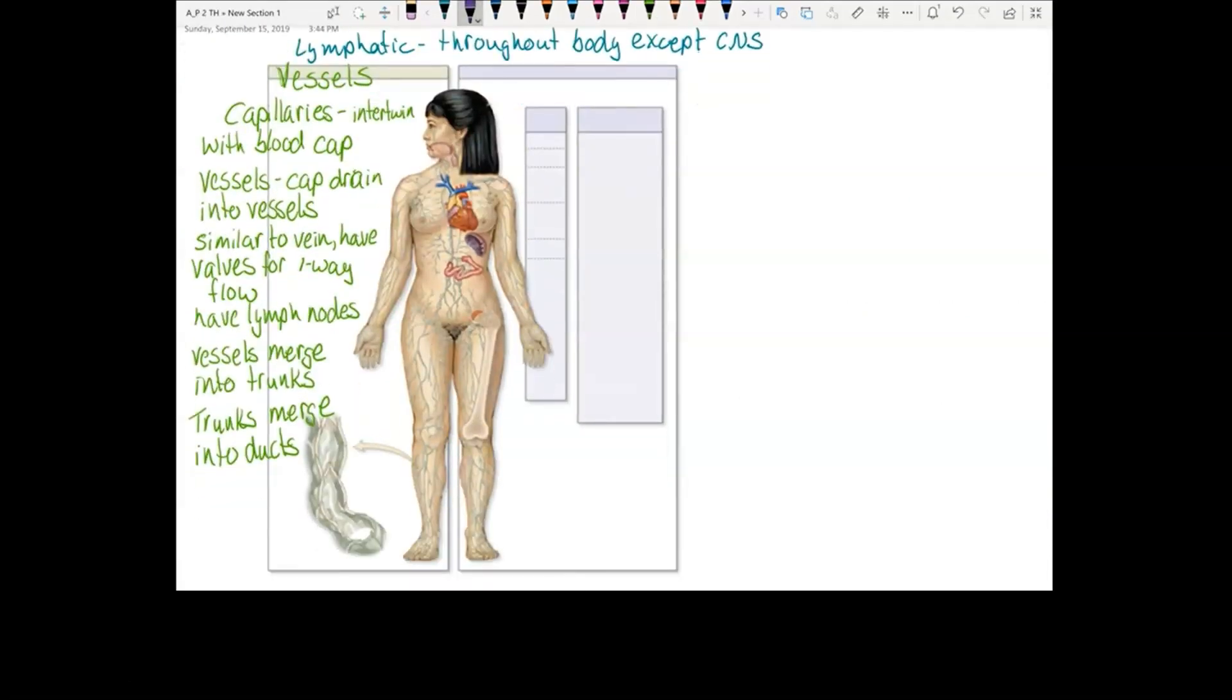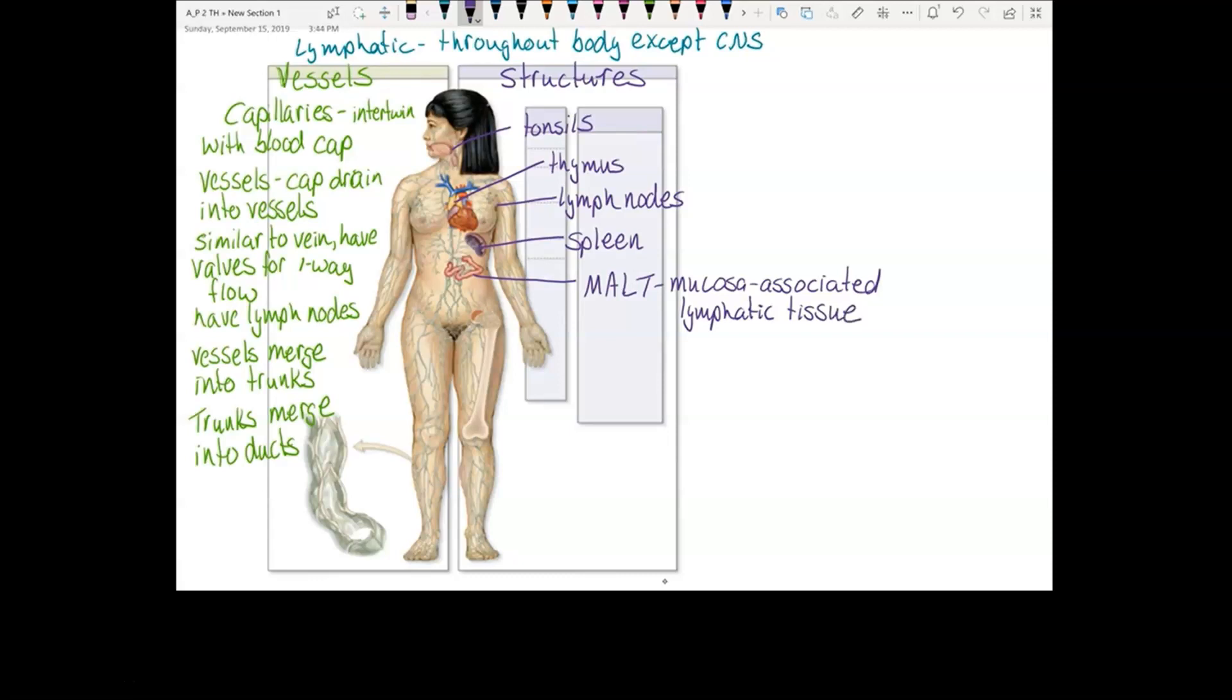Now we can look at the structures. You have the tonsils, the thymus gland, the lymph nodes which are along the vessels, the spleen, and on the intestines and wherever you have mucous membranes you have MALT, which stands for mucosa-associated lymphatic tissue. This is found at entrances to the body: the digestive tract, the urinary tract, the respiratory tract, and then you also have red bone marrow.